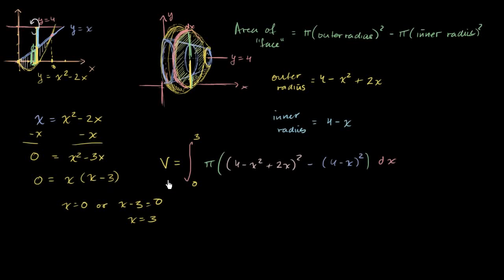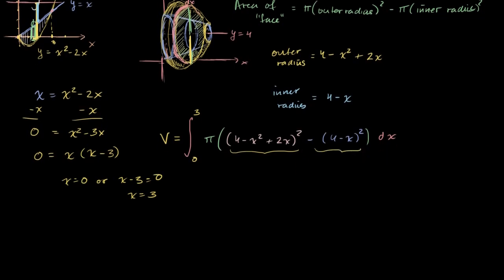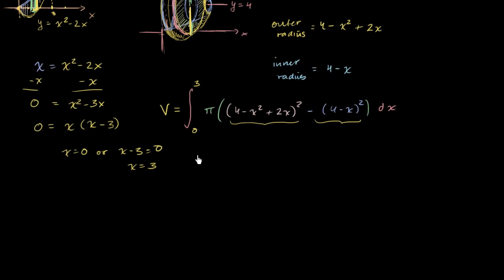Where we left off in the last video, we had actually set up our definite integral to figure out the volume of this figure. So now we just have to evaluate it. The hardest part is going to be simplifying that expression. So let's get to it. We're going to have to do a little bit of polynomial multiplication here.